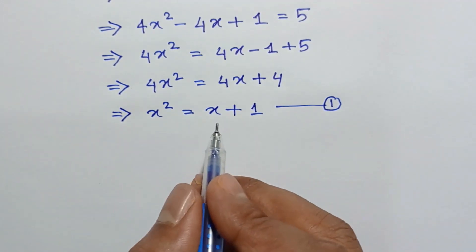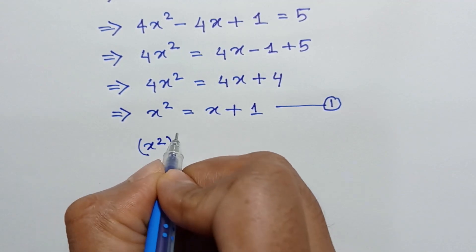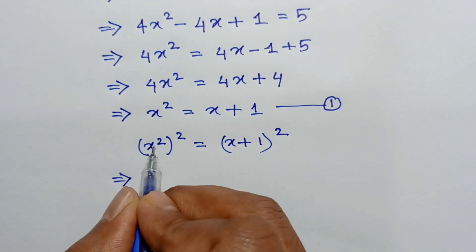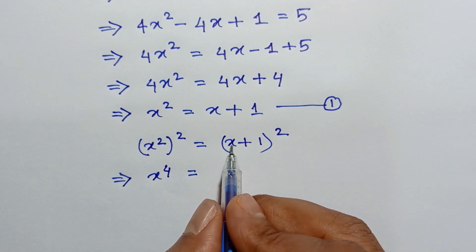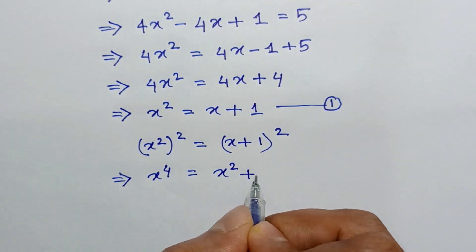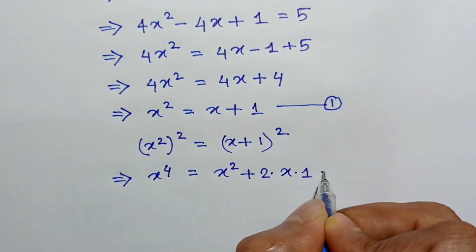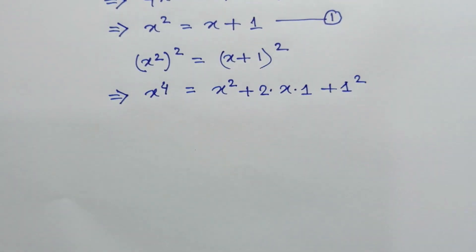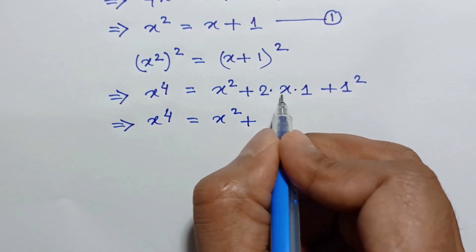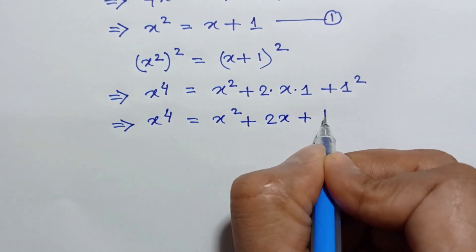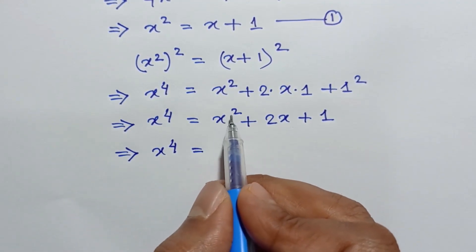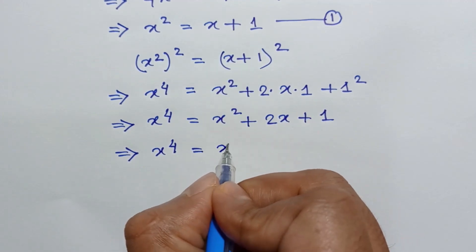If we take a square of both sides of equation 1, we will get (x²)² = (x + 1)², or x⁴ = a² + 2ab + b², giving x² + 2·x·1 + 1². So x⁴ = x² + 2x + 1. Substituting x² = x + 1 from equation 1, we get x⁴ = (x + 1) + 2x + 1.